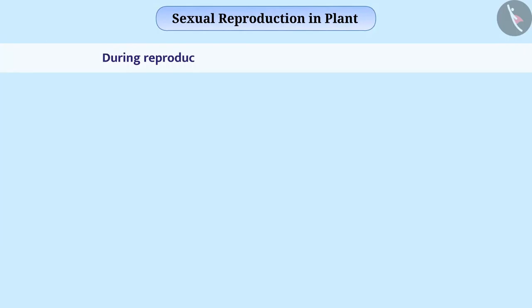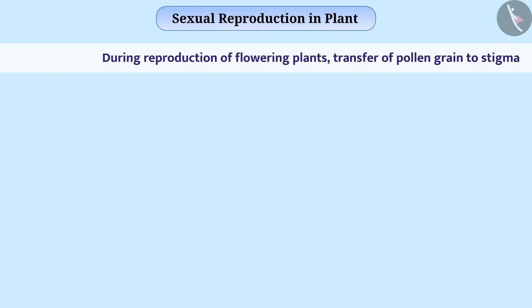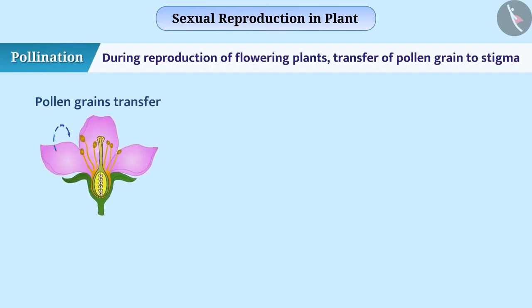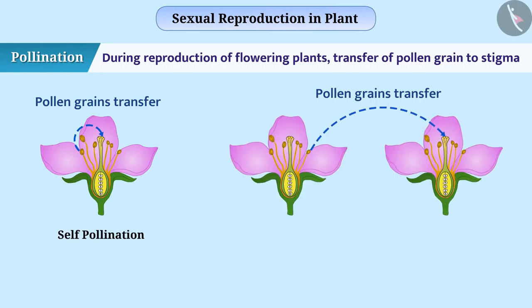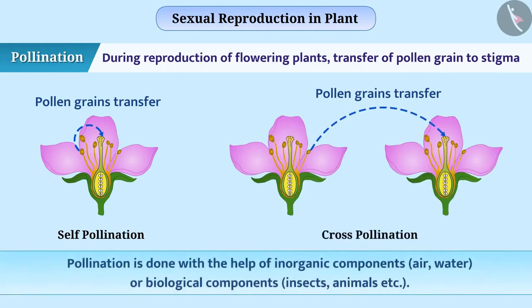During reproduction of flowering plants, it is necessary to transfer pollen grains to the stigma. We call this pollination. If the pollen grain is transferred from the anther of a flower to the stigma of the same flower, it is called self-pollination. When pollen grain is transferred from the anther of one flower to the stigma of another flower, it is called cross-pollination. Pollination is done with the help of inorganic components such as air and water, or biological components such as insects and animals.